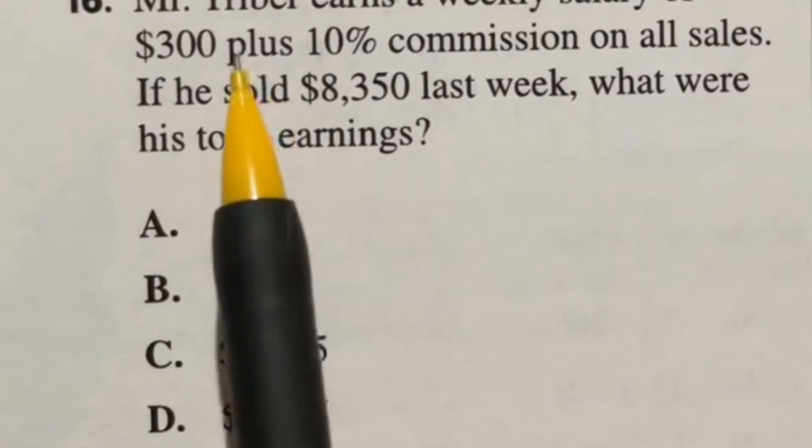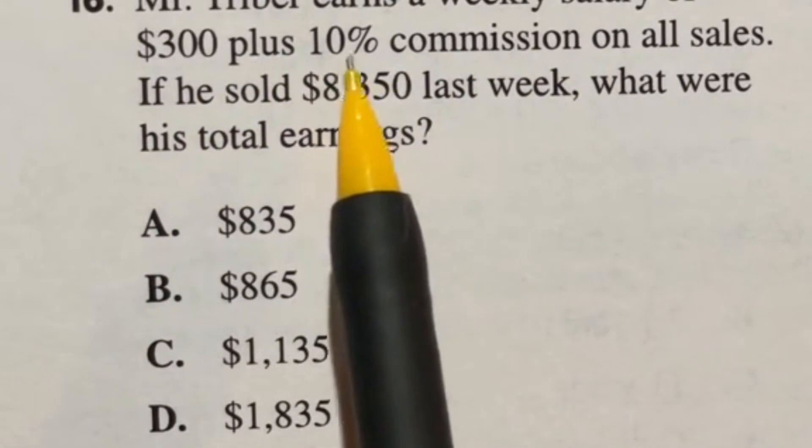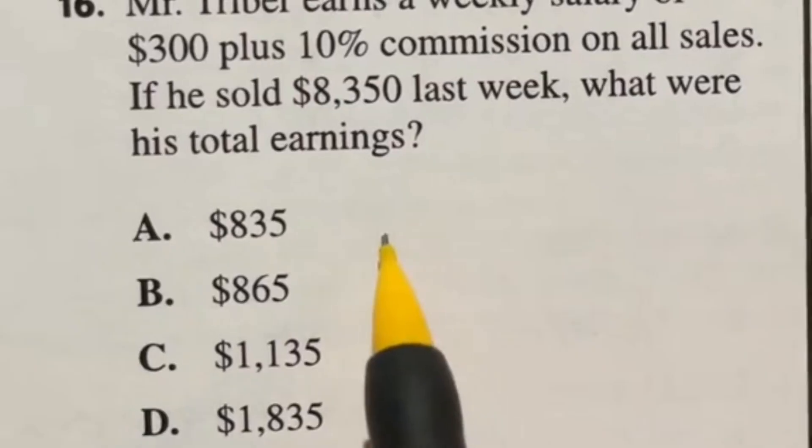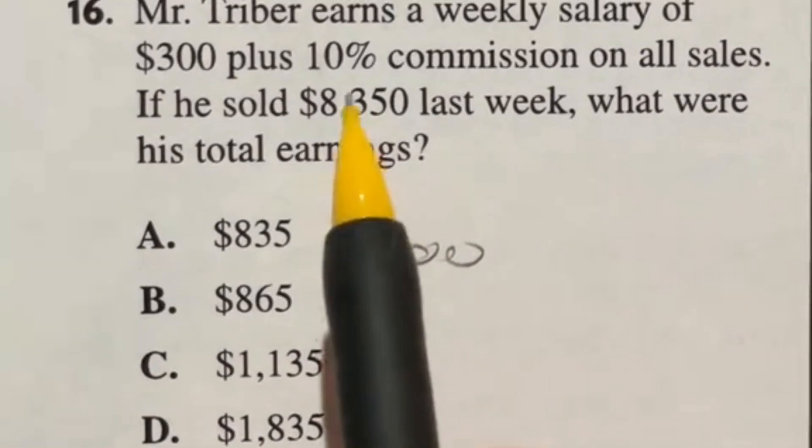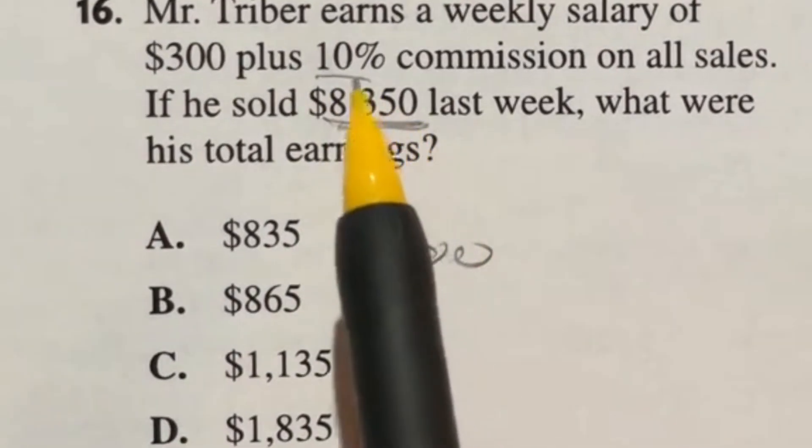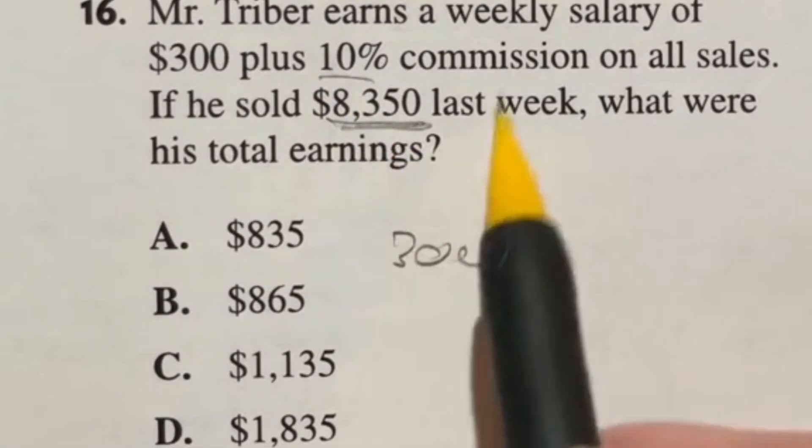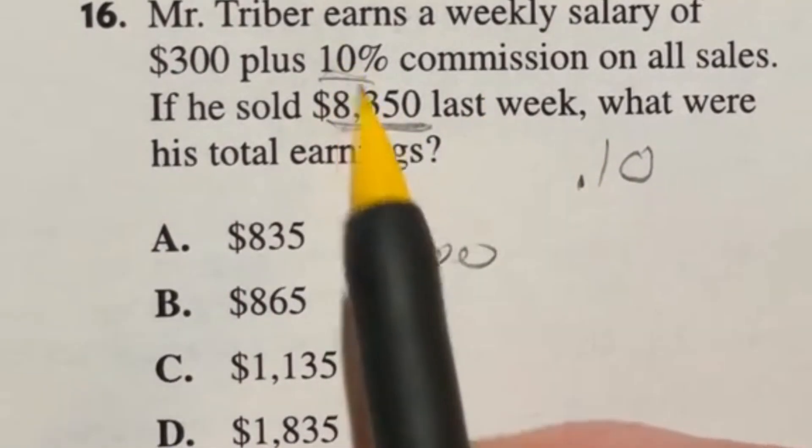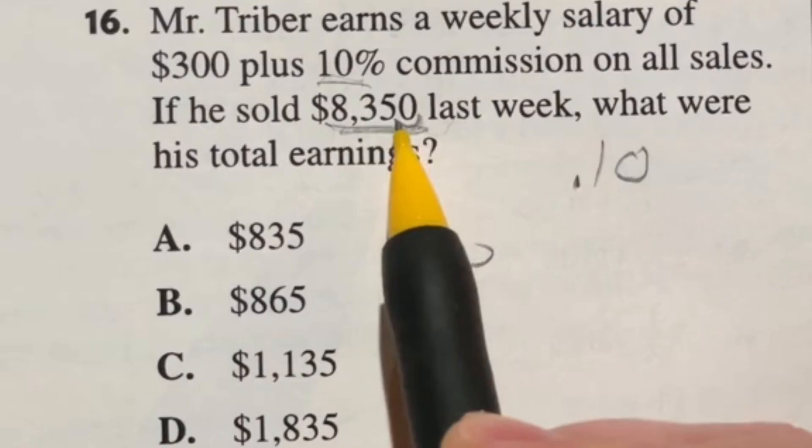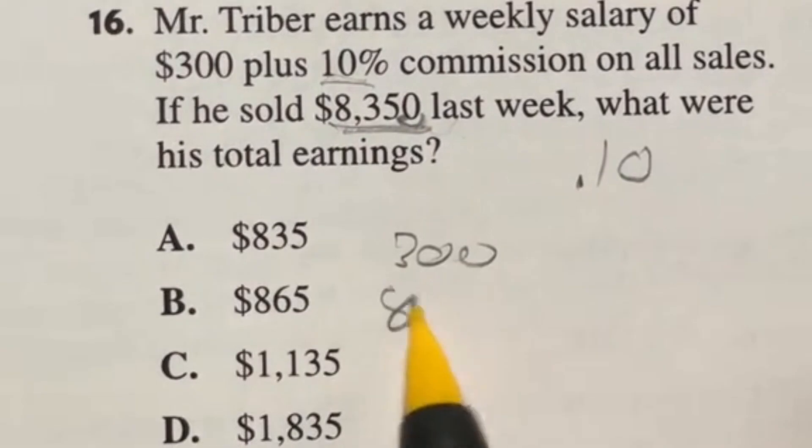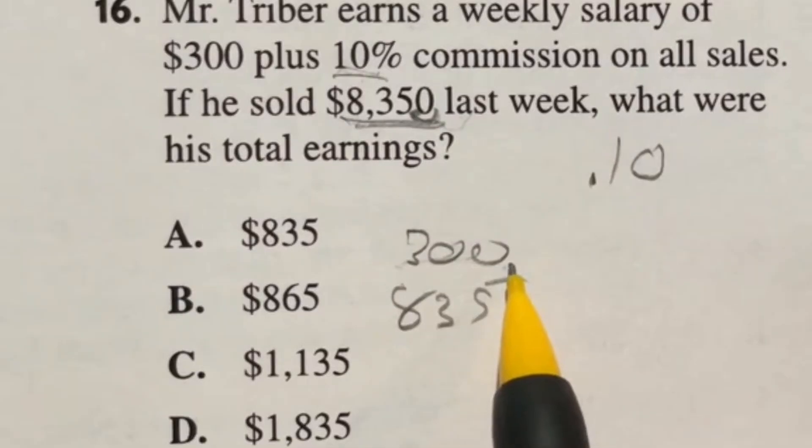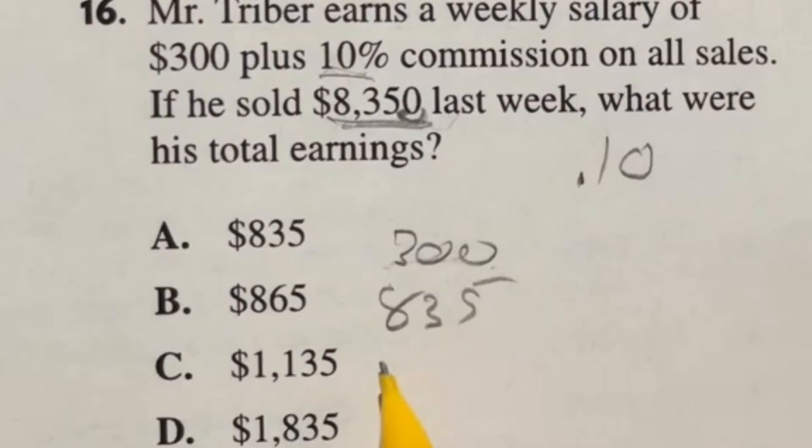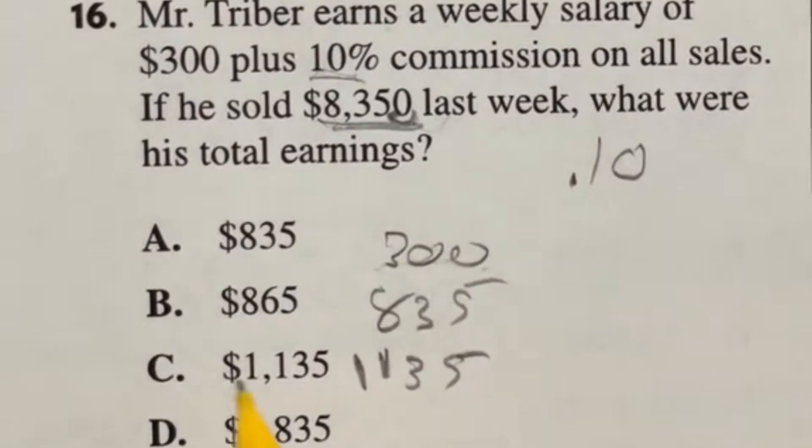Merry Christmas. Let's knock out an easy one. Number 16 says Mr. Tribers earns a weekly salary of $300 plus 10% commission of all sales. If he sold $8,350 last week, what were his total earnings? Well, first off, we got that 300. Then we got to take 10% of this guy. Now 10% is one of those easy ones because anytime you're multiplying by a multiple of 10, it just means you're moving your decimal place. Now remember, 10% is really 0.10 when written as a decimal. So when we're multiplying this out, you're actually going to move it to the left one. So 10% of 8,350 is just going to be $835. So now we have these two numbers, how much he's making per his weekly salary, and then his commission. So if I do 835 plus that 300, that's going to give me $1135. So our final answer here is C.